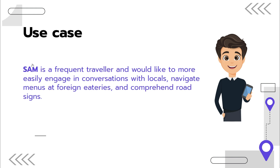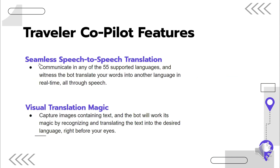Sam would like to easily navigate conversations with locals to gain more authentic cultural experiences. However, language barriers exist, often making it difficult to communicate and connect meaningfully. Even simple tasks like navigating restaurant menus or understanding road signs become frustrating when you can't understand the language. The inability to speak, read, or understand the local language can severely limit Sam's ability to travel independently and confidently.